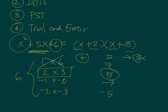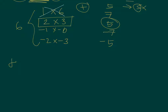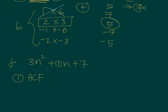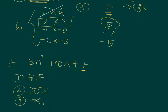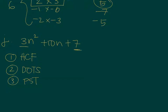That's how you factor expressions that are not perfect square trinomials — by trial and error. Now let's go to letter J. In letter J, we have 3n squared plus 10n plus 7. We check: is it a highest common factor? No, because 7 has no n. Is it a difference of two squares? It's a trinomial, so no. Is it a perfect square trinomial? 3 is not a perfect square, so it cannot be factored as a perfect square trinomial.